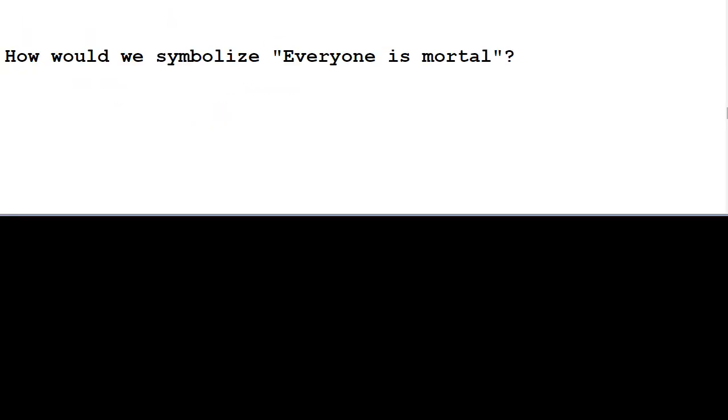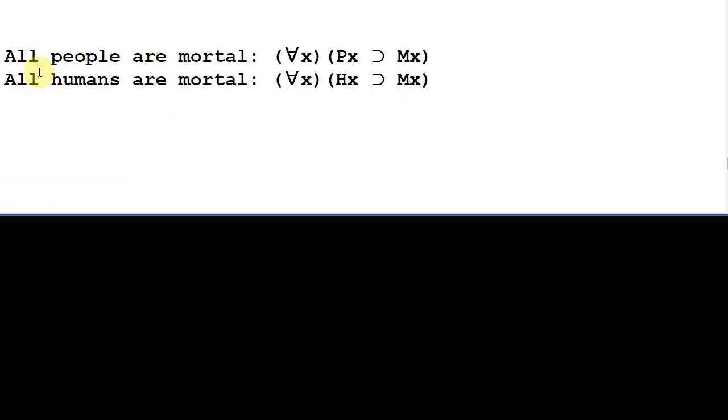While we're on the subject of universal quantifiers, let me ask you, how would we symbolize everyone is mortal? Would we symbolize it like this, for any x, M of x, where M means mortal? Well, no, this is saying everything is mortal, not everyone is mortal. When we speak of everyone, we're normally talking about people or humans. And rather, we might mean something like, all people are mortal, which we could symbolize as, for any x, if x is a person, then x is mortal. Or we might mean, all humans are mortal, which we might symbolize as, for any x, if x is a human, then x is mortal.